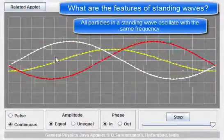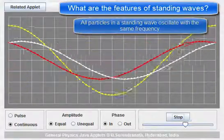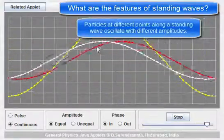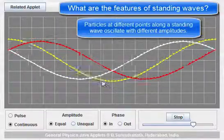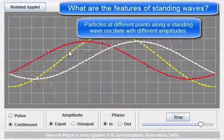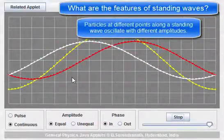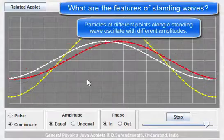What is different, however, is that particles along the wave oscillate with different amplitudes. Here, for example, we have a particle with a very large amplitude, whereas here we have a particle oscillating with a much smaller amplitude. So different points along the wave oscillate up and down with different amplitudes.